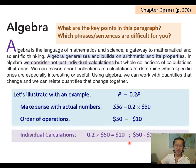So in this case, the individual calculations are the two steps. First, we need to do 0.2 times 50 to get the 10. And then after that, we subtract the 10 from 50 to get the 40. So these are the individual calculations.